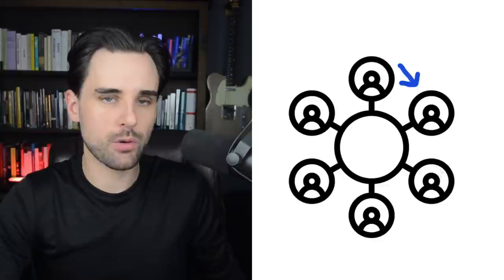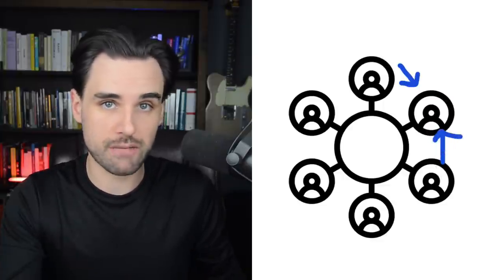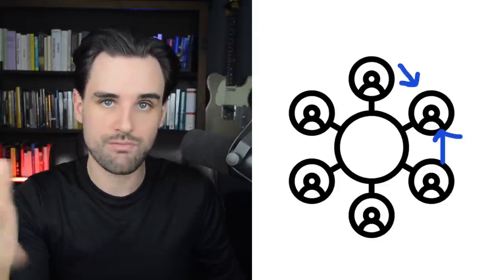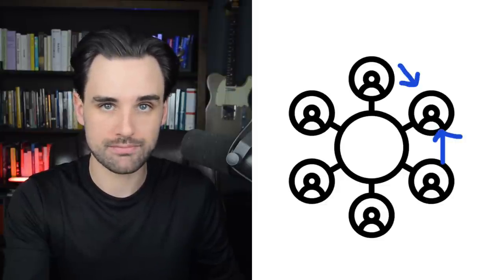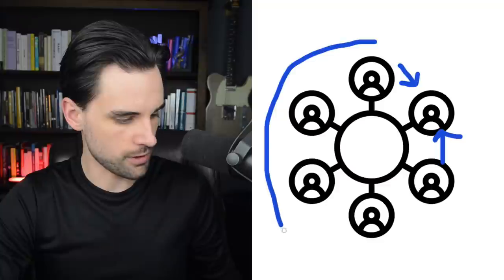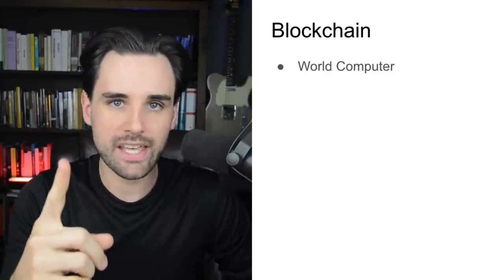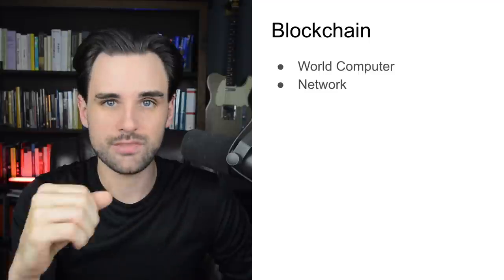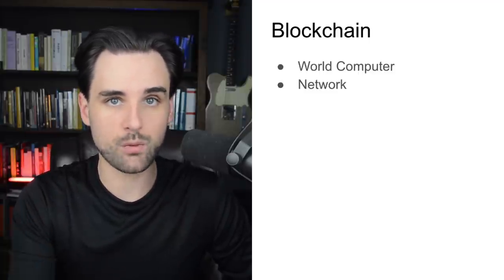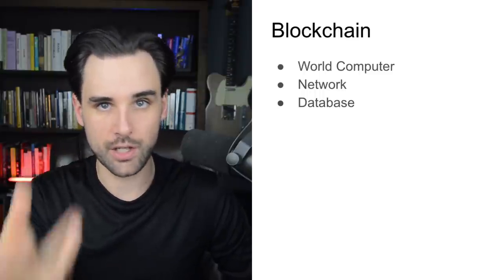Let's start with the basics — what is a blockchain? A blockchain is a peer-to-peer network of nodes that all talk to one another. These nodes are basically just computers that share responsibilities very similar to a web server. They store data and run programs that can be accessed anywhere whenever you're connected to the blockchain. All the nodes work together to create a public network that anyone can connect to. You can think of a blockchain like a giant world computer, a network where you can send money and run programs, or a database where you can store and fetch information.